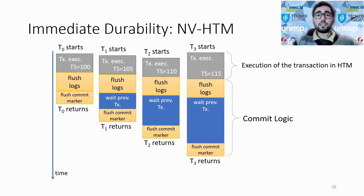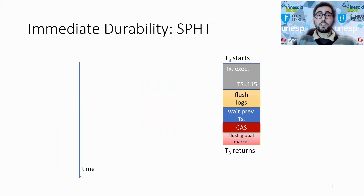SPHT's design is based on the observation that, at high thread count, a large number of transactions is likely to be concurrently trying to commit. The key insight is that if the pending transactions were able to observe their mutual state, then in this example, T3 — because it is the transaction with the highest physical clock — could update a global commit marker in PM that represents the set of transactions from T0 until T3. More in detail, T3 obtains physical timestamp 115, flushes its log, manages to update the persistent global marker, and then flushes it to PM.